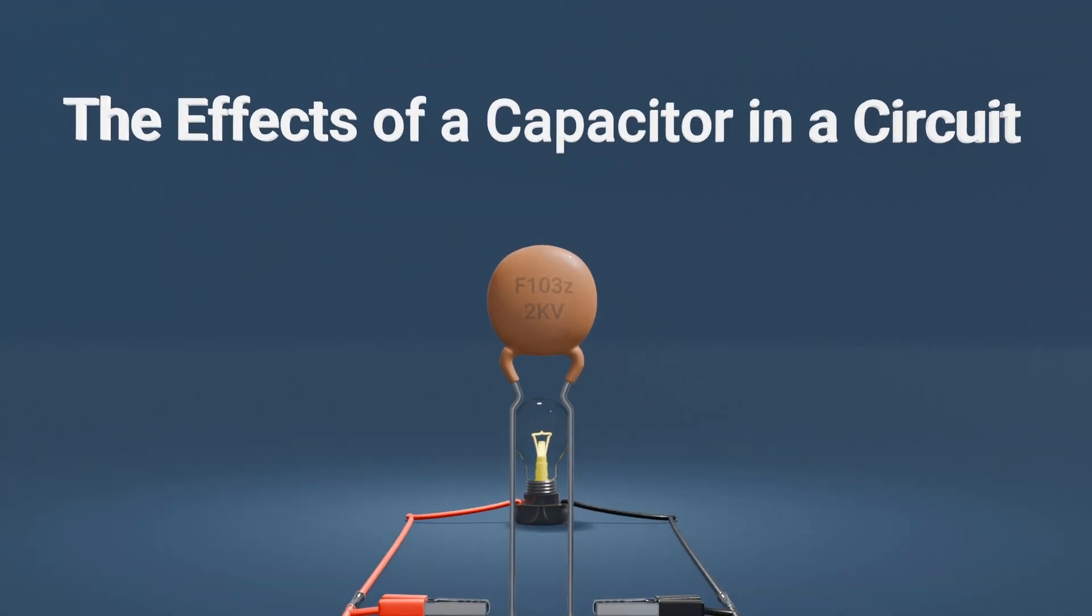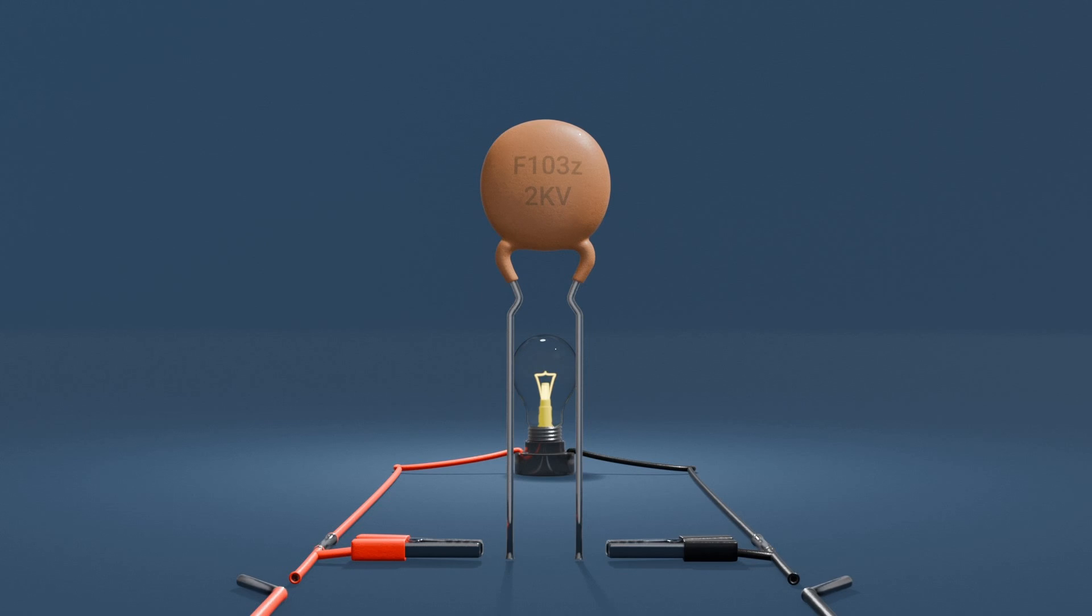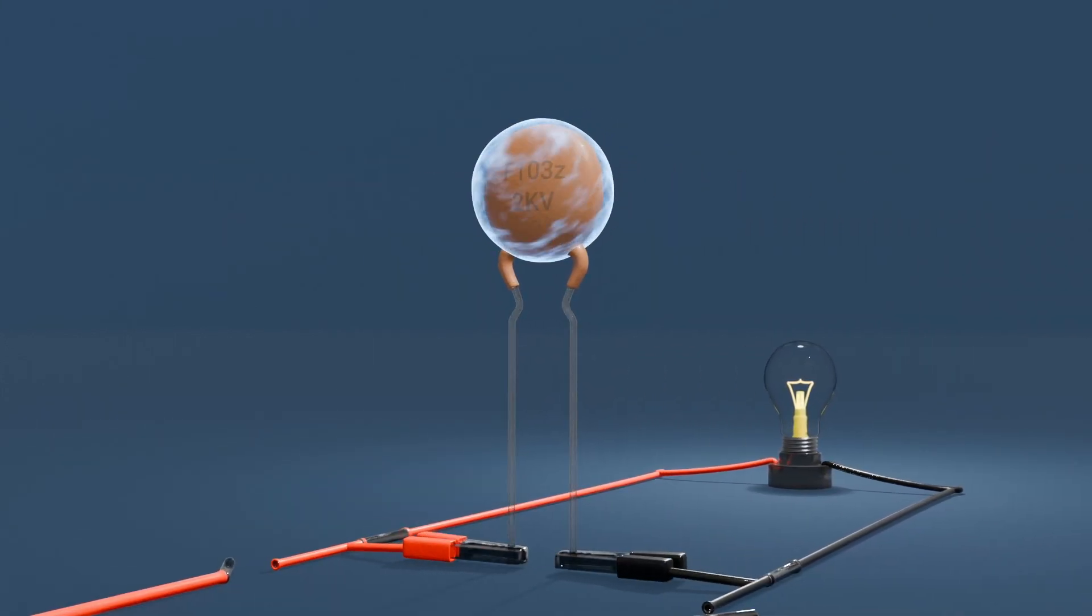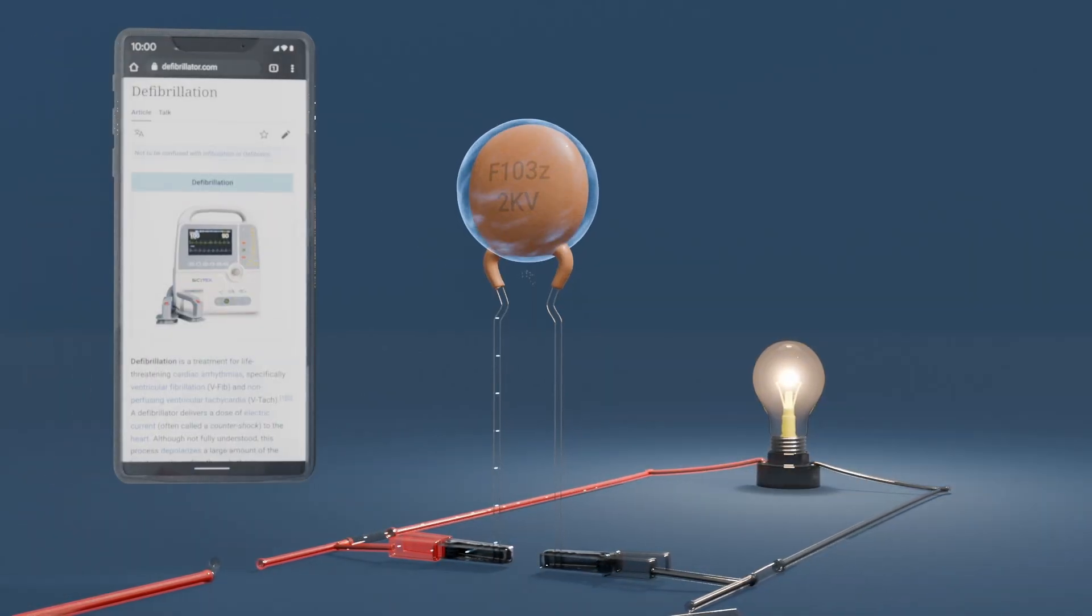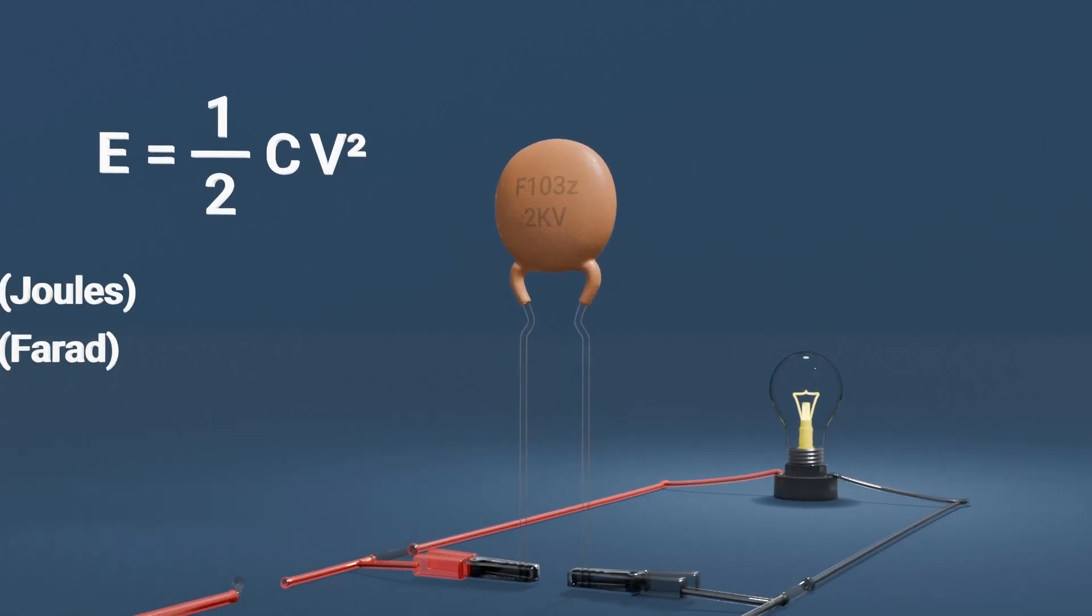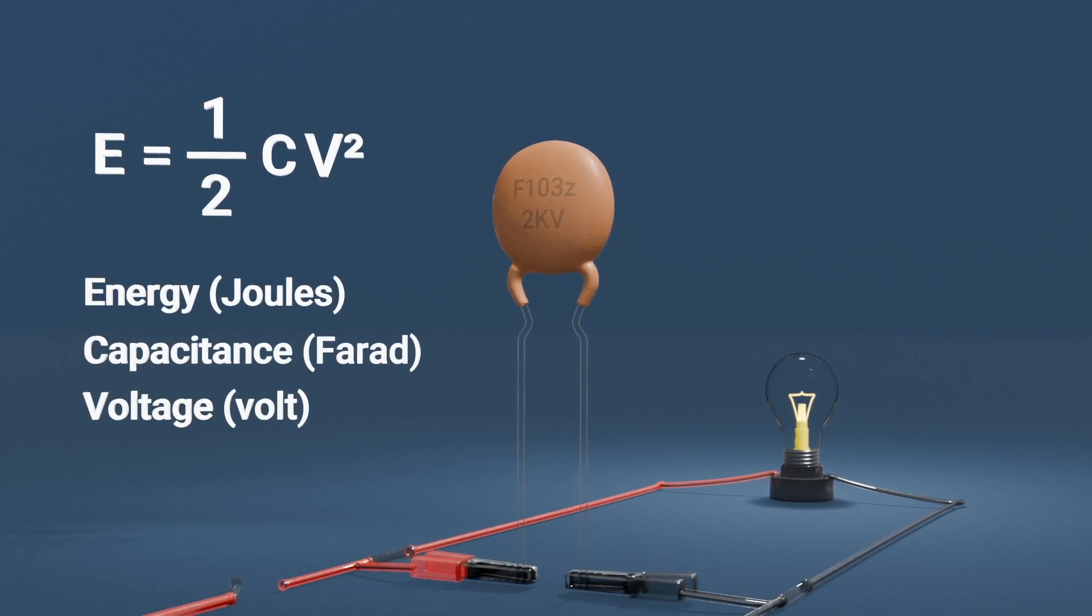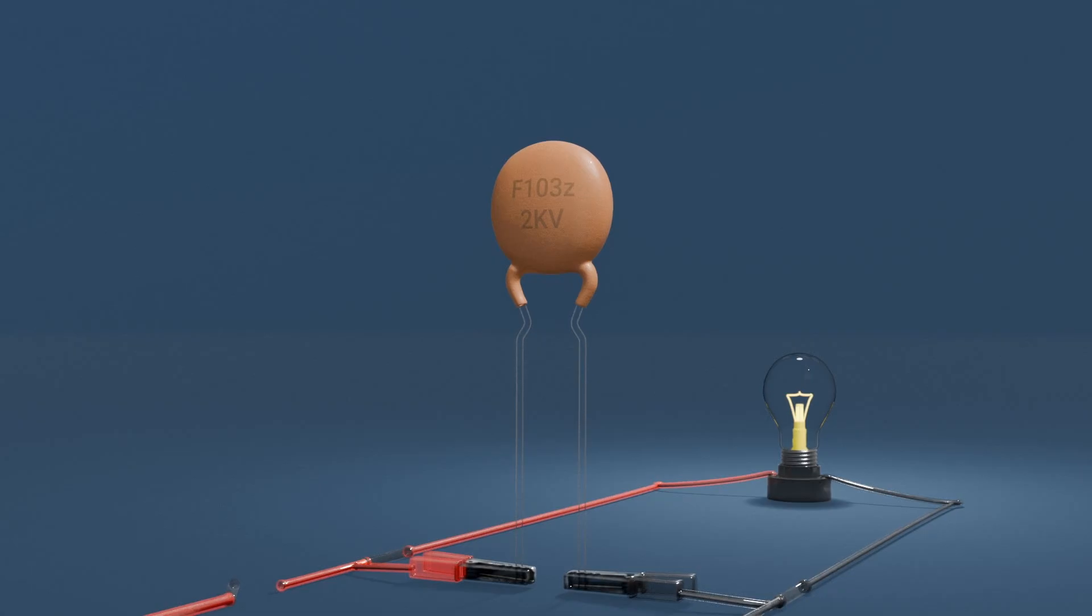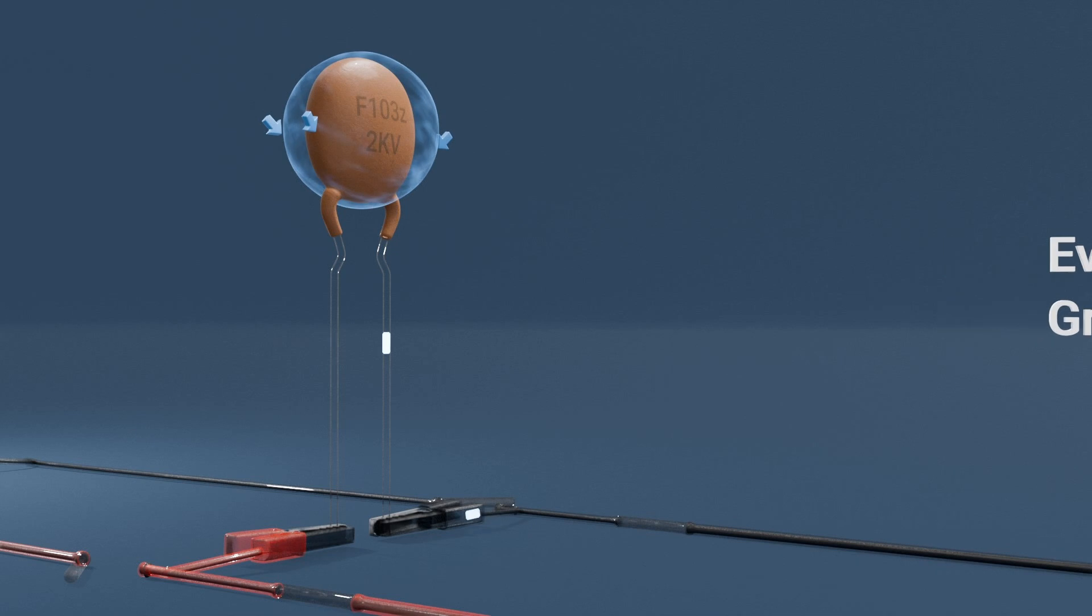The effects of a capacitor in a circuit: capacitors have some fascinating effects when used in electrical circuits. Energy storage: a capacitor can release stored energy in an instant, making it invaluable in applications like camera flashes and defibrillators. The energy stored in a capacitor is given by this formula, where E is the energy in joules, C is the capacitance in farads, and V is the voltage across the capacitor. The quadratic dependence on voltage shows that even a small increase in voltage greatly enhances the stored energy.